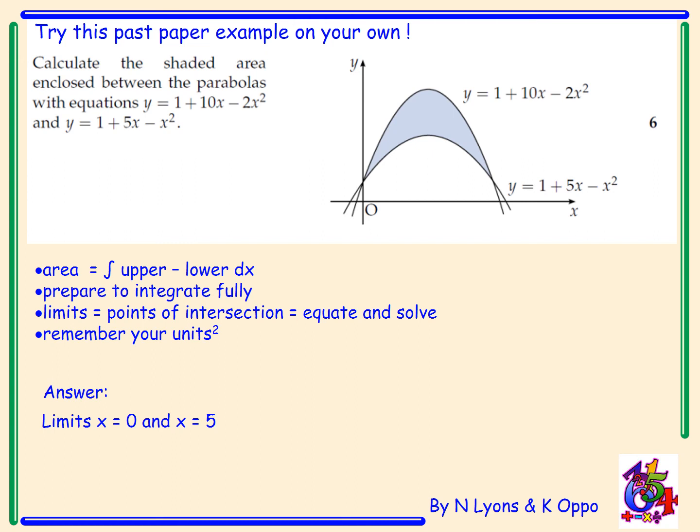And I've just had the answer in there already. So the answer has already been unveiled as limits equal x equals 0 and x equals 5. But I've not told you the area yet. So pause just now and then come back. Right, 6 mark past paper question. I want you to try and figure out where your 6 marks come from. The teacher will go over this in class. But I have got the area to be 125 over 6 square units. Hopefully you did too. Any problem, speak to your teacher.